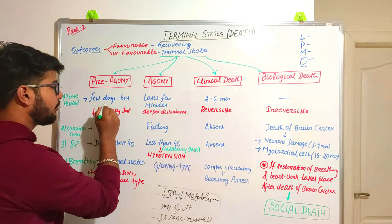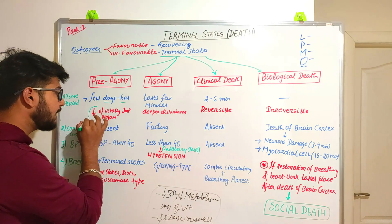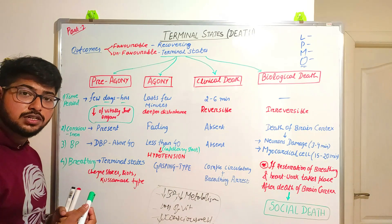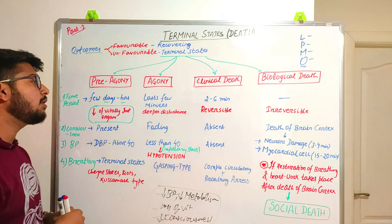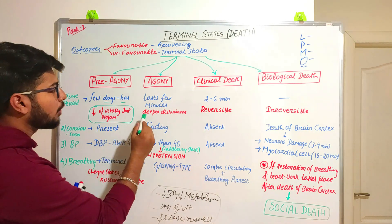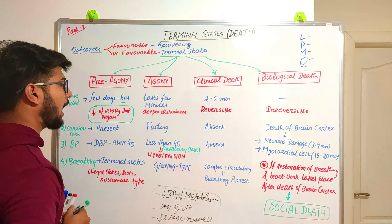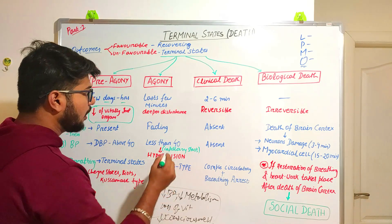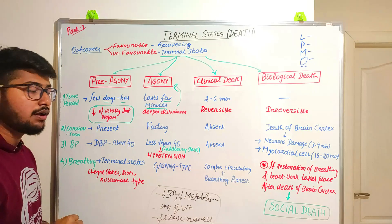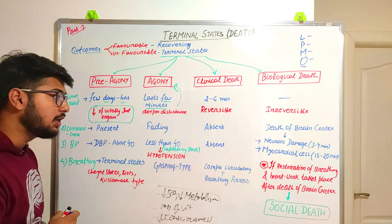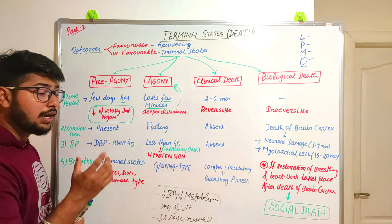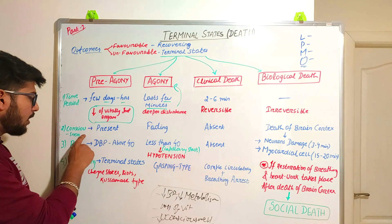During pre-agony there is a starting decrease in vitally important organs like the respiratory system and cardiovascular system, which become slowly less functional. In the agony stage, this condition lasts for only a few minutes, during which there is a violation at a deeper level of these vitally important organs. Regarding consciousness: in pre-agony, consciousness is present; in agony, consciousness starts to fade away as the person slowly loses it.